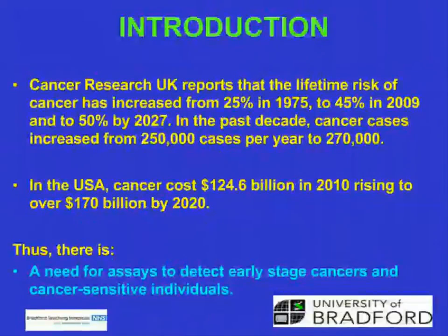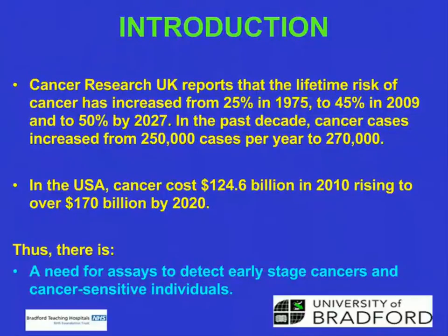Cancer Research UK reports that the lifetime risk of cancer has increased from 25% in 1975 to 45% in 2009, and by 2027 they reckon it will be 50% — meaning one in two people will get it. In the past decade, cancer cases increased from 250,000 to 270,000 cases per year. In the USA, cancer costs rose from 1 to 4.6 billion in 2010, rising to over 170 billion by 2020. Therefore, there is a need for assays to detect early-stage cancers and cancer-sensitive individuals.